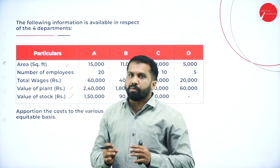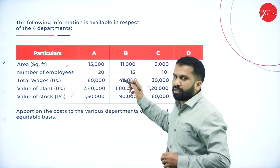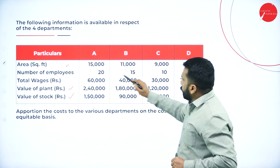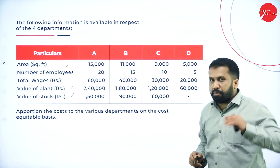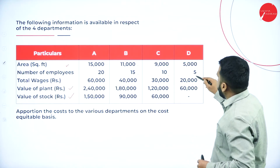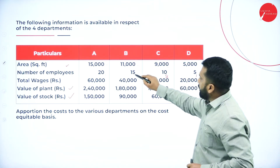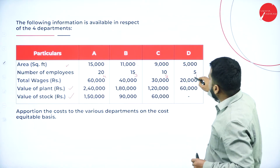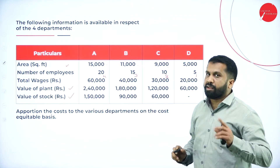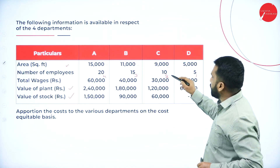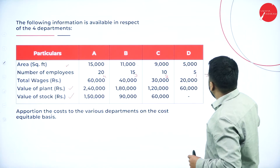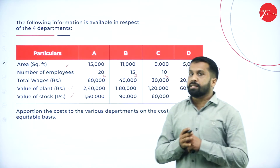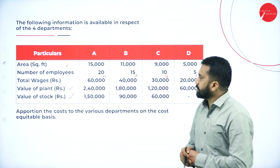For example, take 20, 15, 10, 5 — can you simplify this? Take the table of 5: 5×1, 5×2, 5×3, 5×4 — so the ratio becomes 1:2:3:4. Add them up: 4+3=7, 7+2=9, 9+1=10. Your total is 10. Like this, you are supposed to work out all calculations.